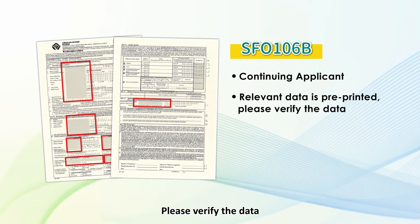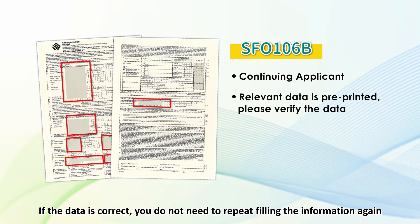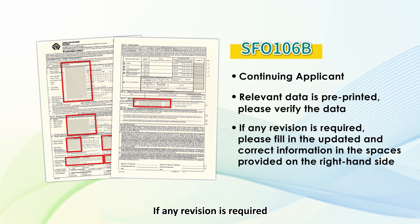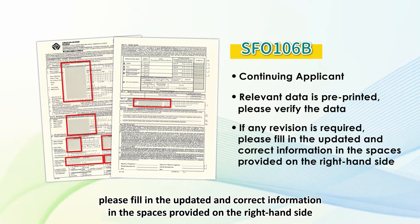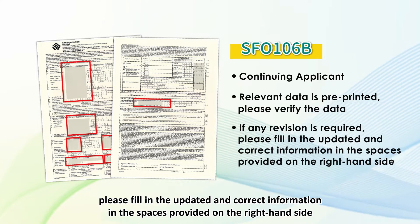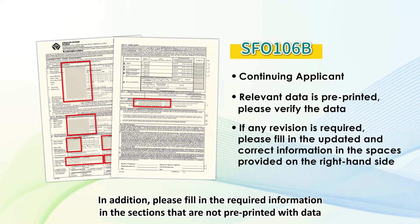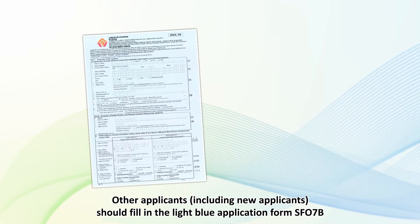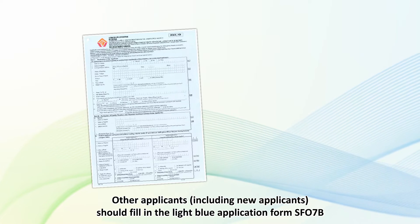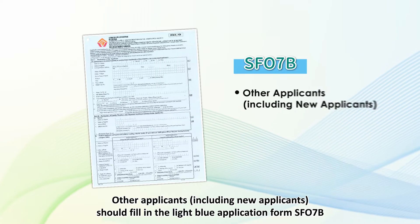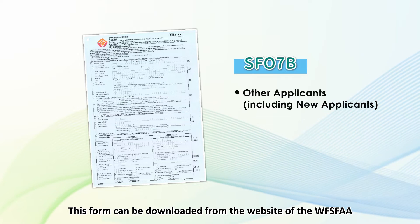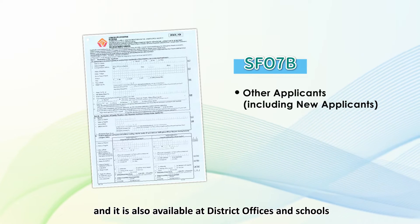Please verify the data. If the data is correct, you do not need to repeat filling the information again. If any revision is required, please fill in the updated and correct information in the spaces provided on the right-hand side. Please also fill in the required information in the sections that are not pre-printed with data. Other applicants, including new applicants, should fill in the light blue application form SFO-7B. This form can be downloaded from the website of the WFSFAA, and it is also available at district offices and schools.